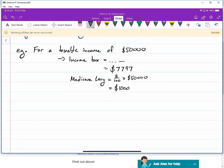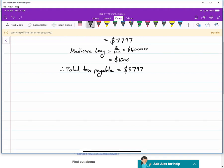Therefore, the total tax payable is the income tax plus the Medicare Levy. So you actually are paying $8,797 of your $50,000 that you earned as tax. $7,797 as income tax and the Medicare Levy tax is $1,000. So that's the first one.